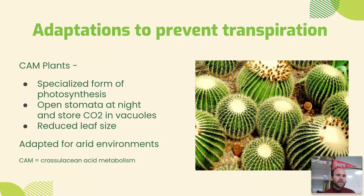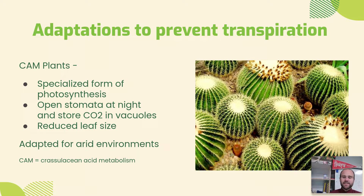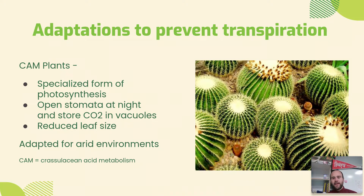In desert-type plants you're going to see a lot of these adaptations. You'll also learn about C4 plants, which is another specialized form of photosynthesis that's really common in prairies that can be pretty dry during the summer, allowing plants to regulate transpiration as well.